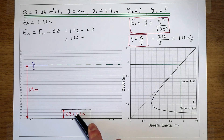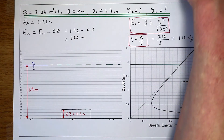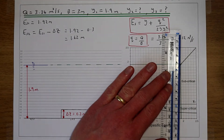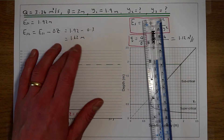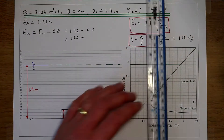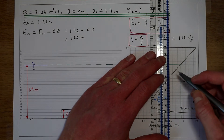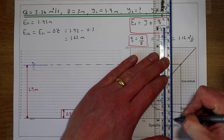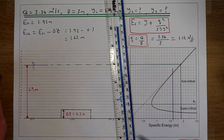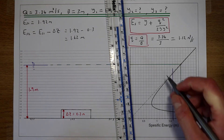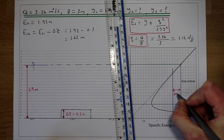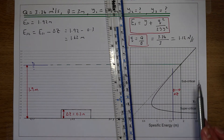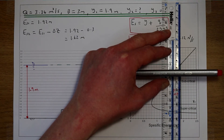To work out the flow depth over the step, we need to find the depth at this new specific energy level. We started at 1.92 metres on the x-axis and now our new specific energy is 1.62 metres — just above 1.6 on the x-axis. We've simply shifted that energy line down by delta z, 0.3 metres, from 1.92 down to 1.62.